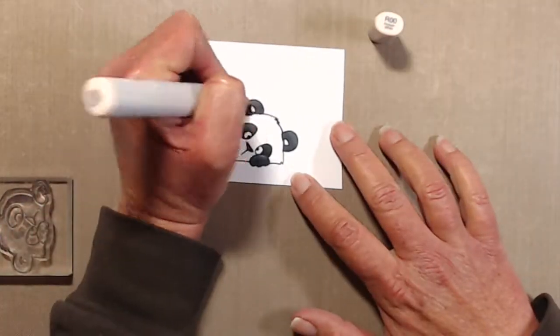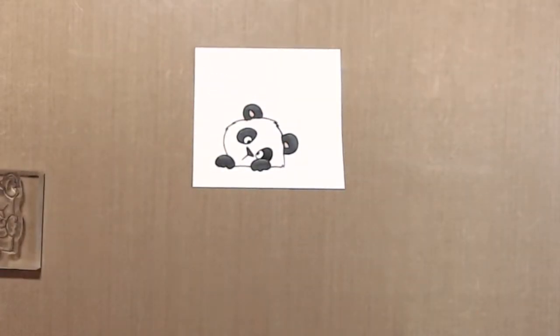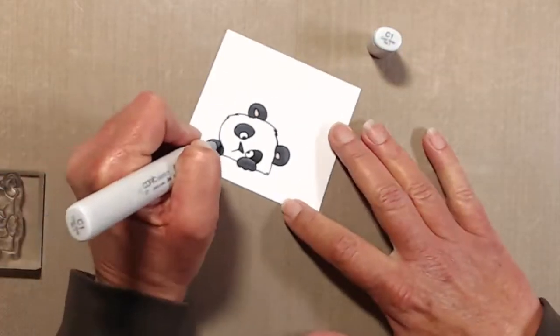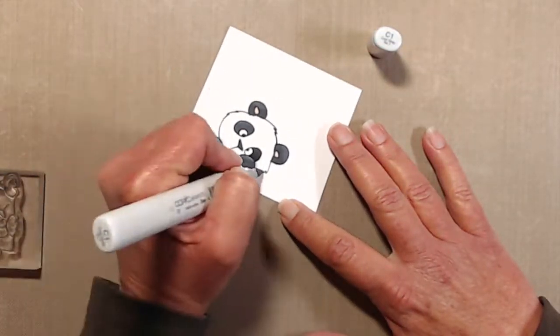Then I added a tiny little bit of R00 to the inside of his ears. And then to add shading around his face, I went in with my C1 marker.